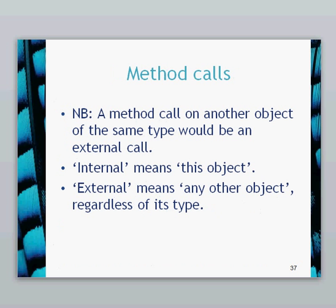Just a quick note: a method call on another object of the same type is still an external call. Internal means within the code you're writing on that particular class — that's an internal call, meaning this object. External means any other object, regardless of its type. So if you create an object, even if it's the same object type, any method call on it is still an external method call.